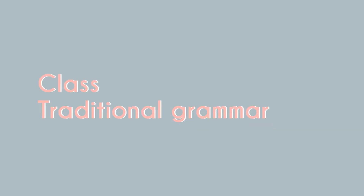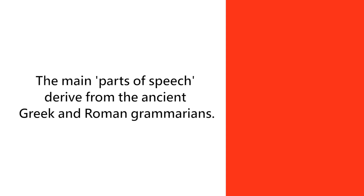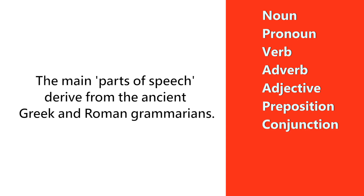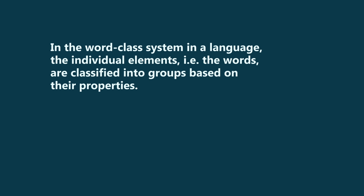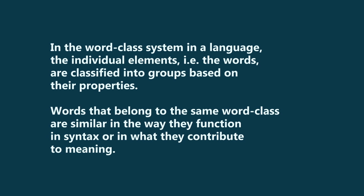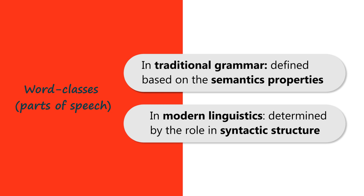In traditional grammar, the term 'part of speech' is what we mean when we say word class. Traditional grammar, based on Greek and Latin, identified eight word classes: noun, pronoun, verb, adverb, adjective, preposition, conjunction, and interjection. In traditional grammar, word classes were defined primarily based on semantic properties, whereas in modern linguistics a word class is defined primarily by its role in syntactic structure.